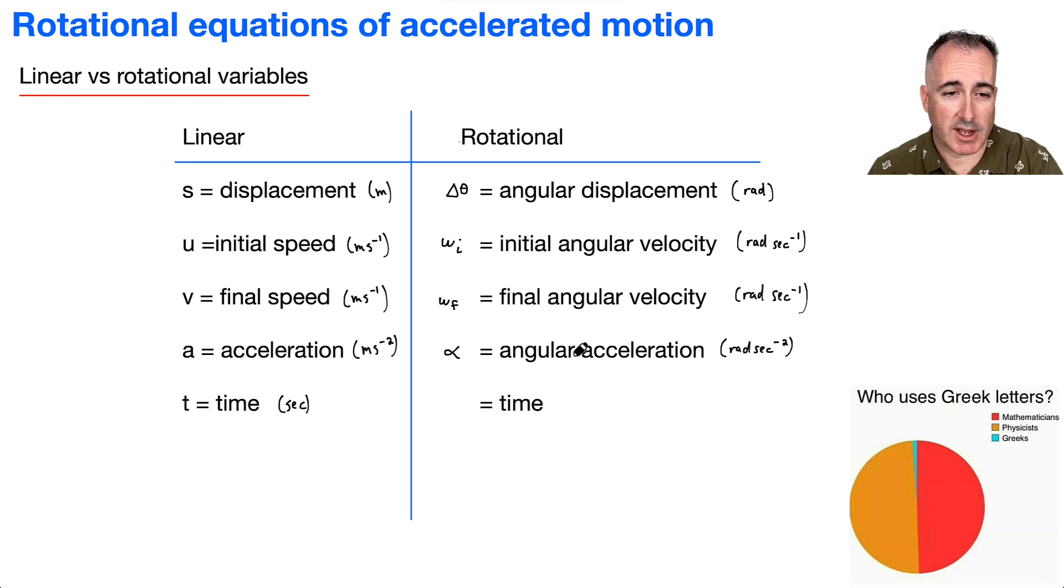So very similar to what we had for acceleration, except radians instead of meters. And finally, t is time, and thankfully that's the same. There's no rotational version of time. Time is still time.